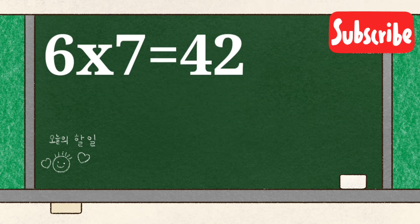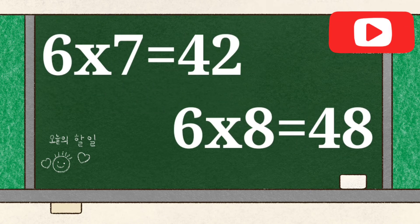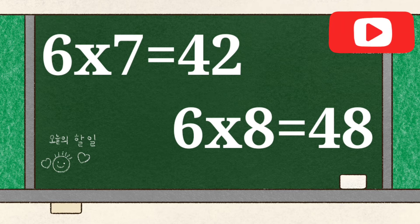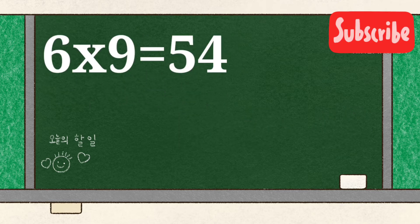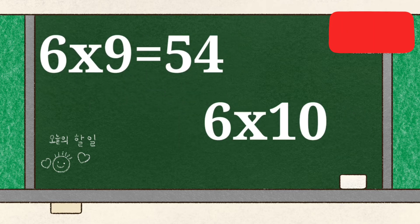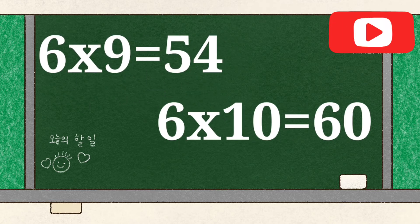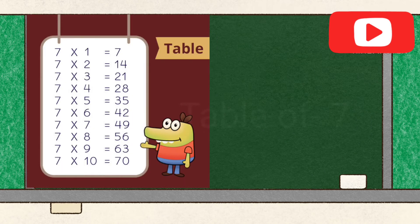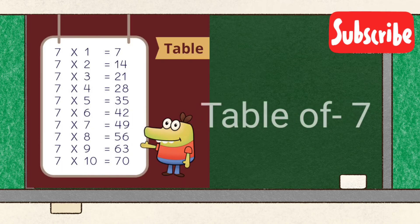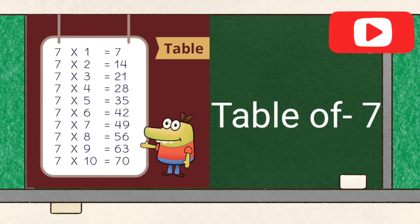6 7's are 42, 6 8's are 48, 6 9's are 54, 6 10's are 60. Table of 7.